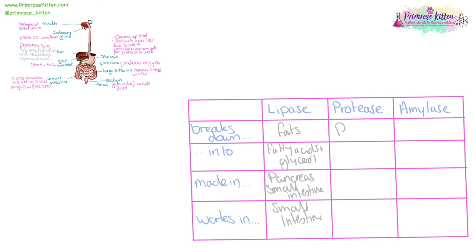Protease breaks down proteins into amino acids. It is made in the stomach, pancreas, and small intestine, and works in the stomach and small intestine.